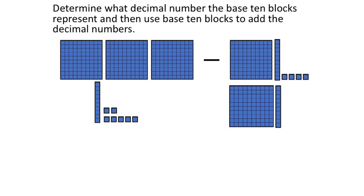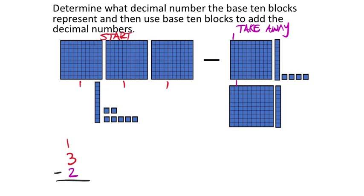Now we're subtracting, and order does matter. I'll start with the first values: 1, 2, 3 whole blocks. From the second number — what I'm taking away — there are 1, 2 whole blocks. That's like taking 3 and subtracting 2, so you end up with 1 full block. Another way to show this: these two whole blocks zero each other out — you had one and spent one — leaving just 1.